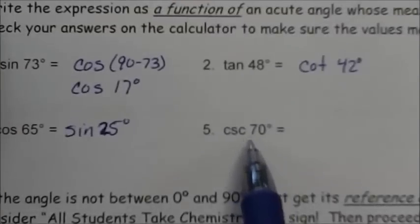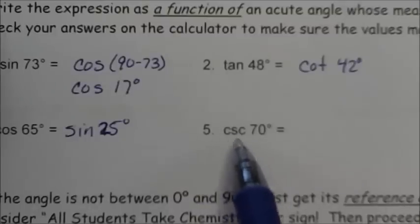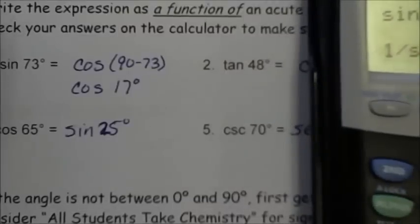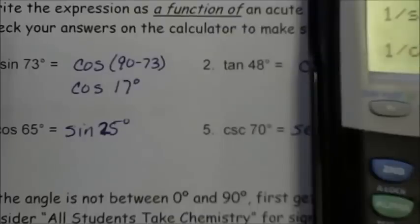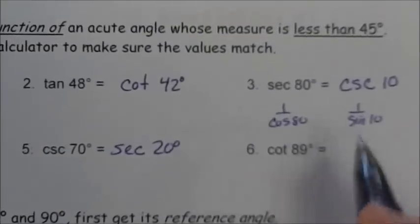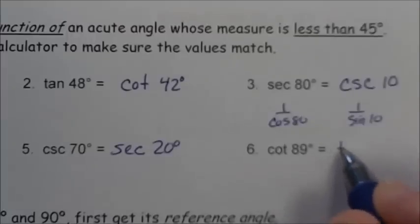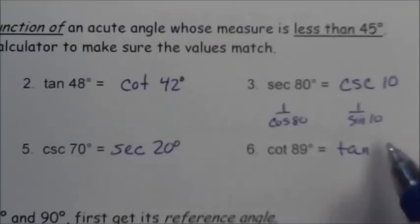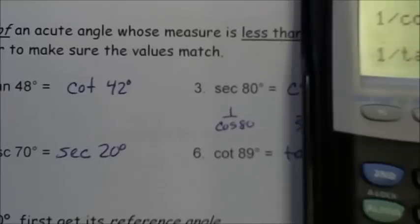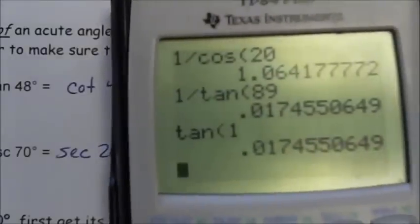Cosecant of 70: 70 is not less than 45, so we use the co-function. Co-function of cosecant is secant, and the complement of 70 is 20. Checking: 1 over sine 70, and 1 over cosine 20 — that matches. The co-function of sine of 89 is cotangent. So 1 divided by tangent 89 and tangent 1 — same decimals, they match.